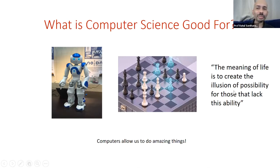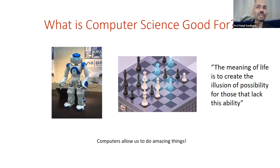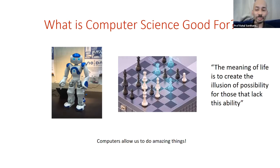The British company DeepMind's recent program AlphaZero learned how to play chess between breakfast and lunch on a single day and became the best chess-playing program that day — not just the best human, but the best chess-playing program. So algorithms are making amazing strides at playing chess and we can't keep up with them anymore. The third image here is of a quote: 'the meaning of life is to create the illusion of possibility for those that lack visibility,' which is actually from an artificial intelligence — a text generation system called GPT-3.